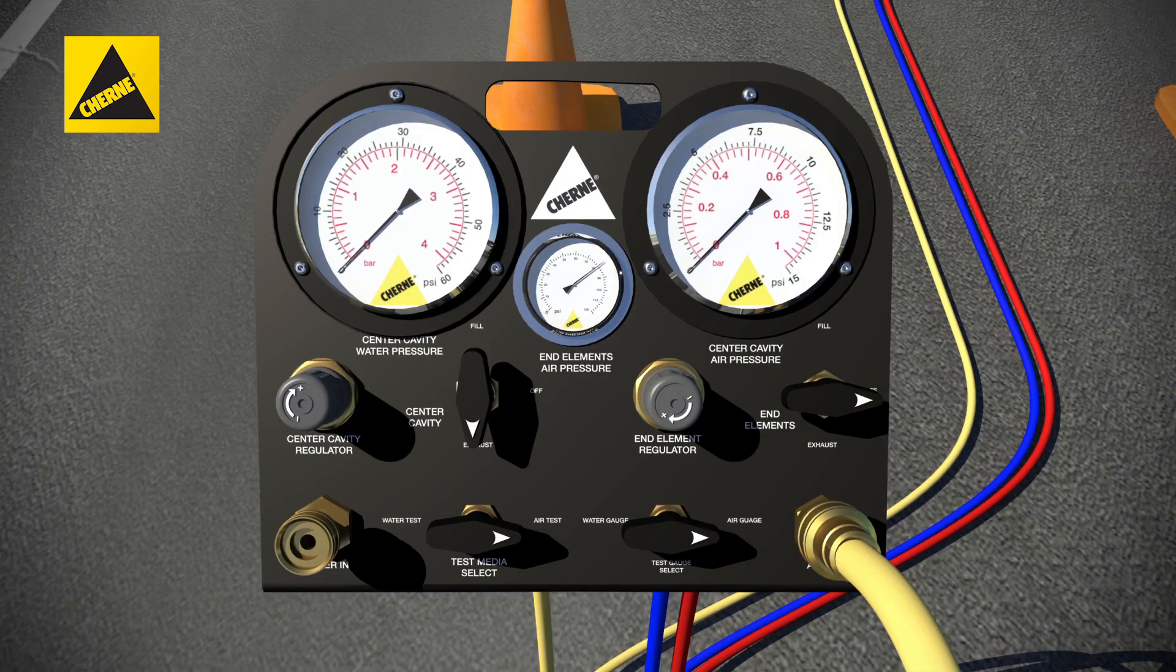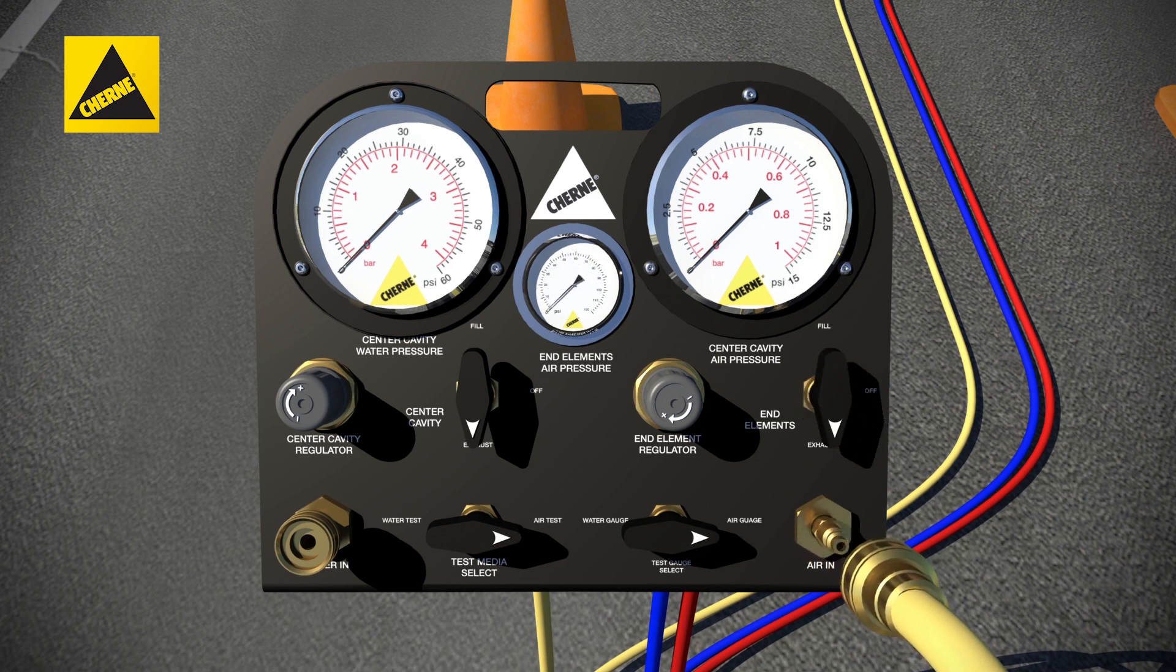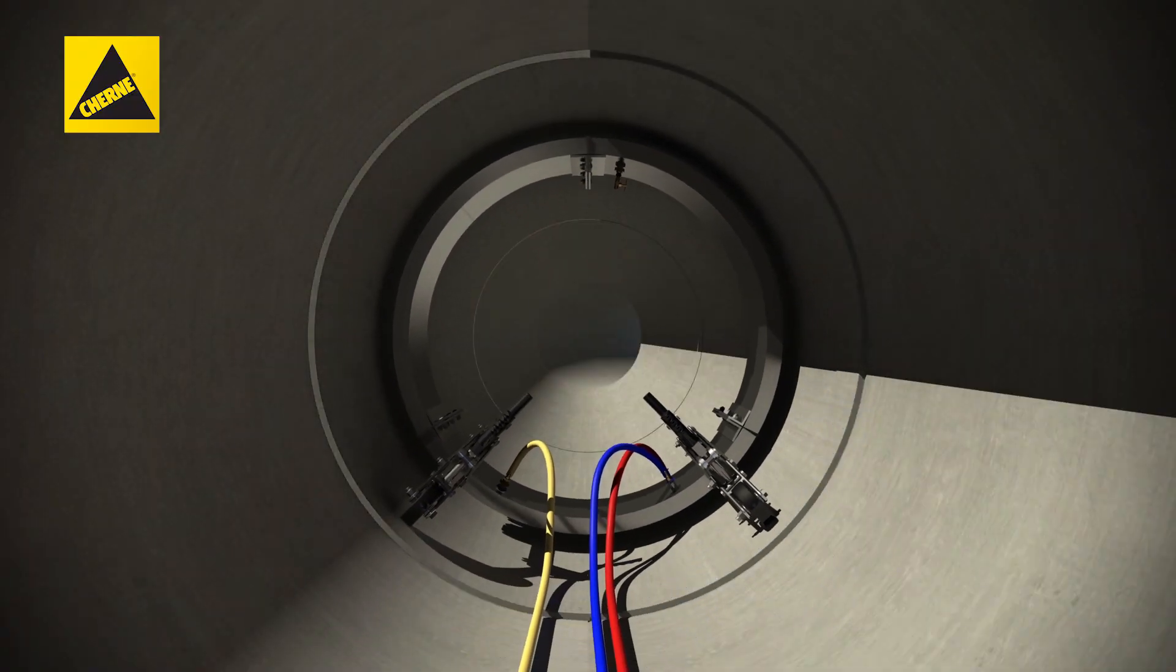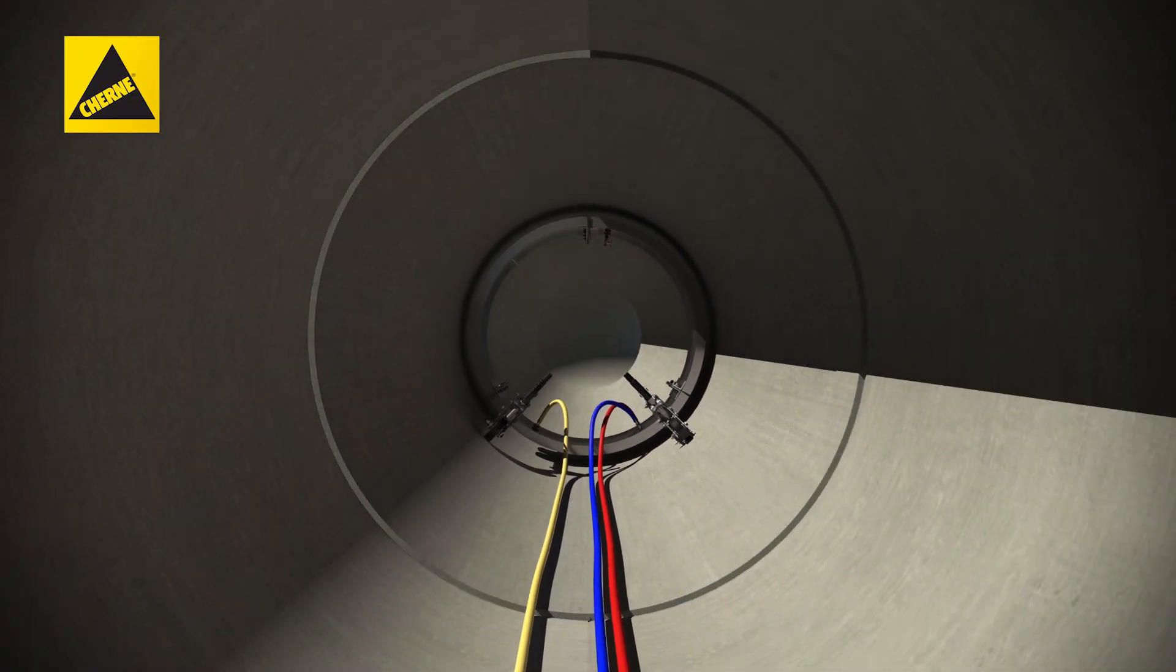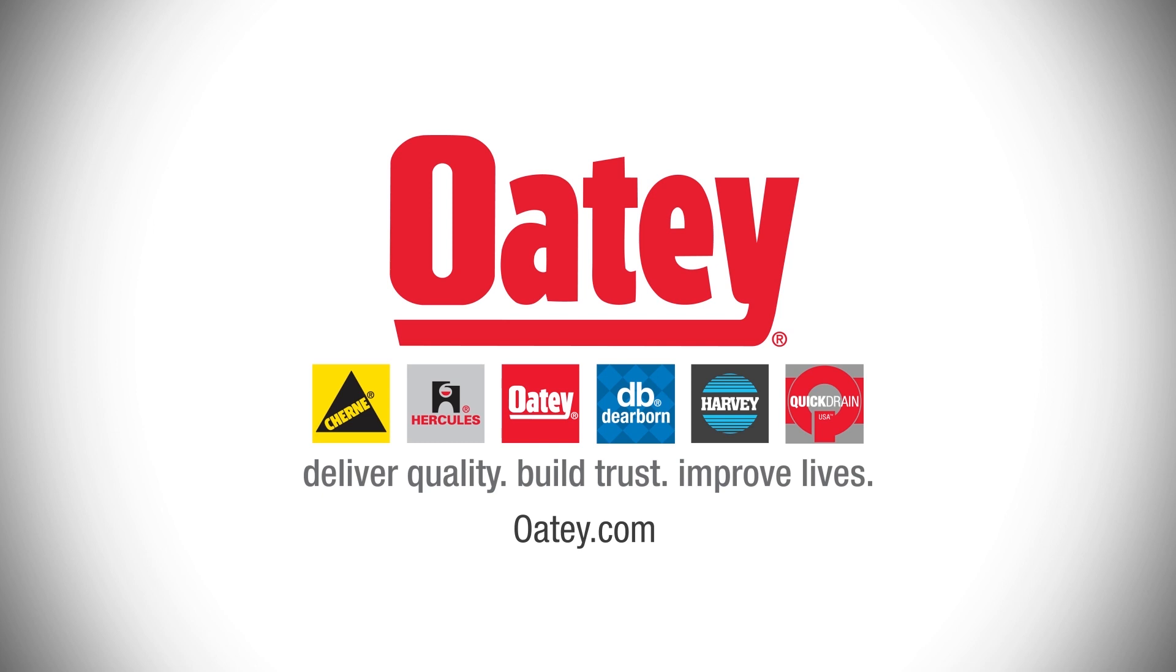Relieve the test pressure and deflate the end elements. When the end element pressure gauge reads zero, disconnect the air hose and roll the joint tester to the next joint to be tested.